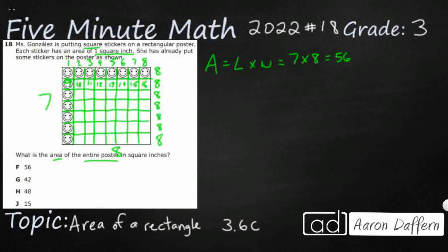So if you were to keep filling this out — seventeen, eighteen, nineteen, twenty — once we see that, counting individually becomes kind of silly, doesn't it? We could just multiply the length times the width. That's why they give us the two rows. So our answer of 56 right there is F.